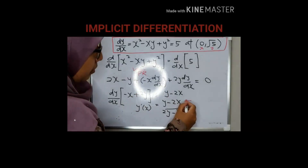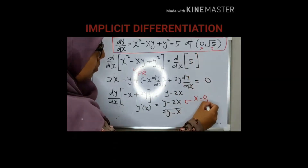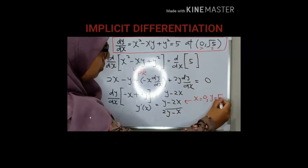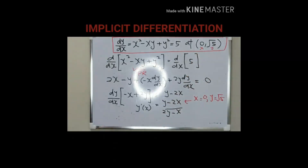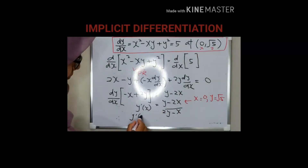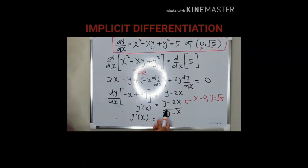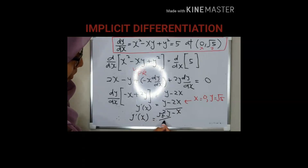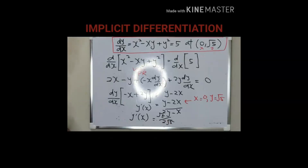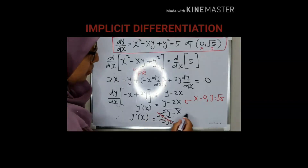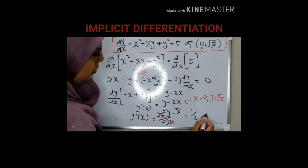Now plug in the values x equals 0 and y equals square root of 5. Substituting gives square root of 5 over (2 times square root of 5). The square root of 5 terms cancel, giving the final solution: dy/dx equals 1 over 2.